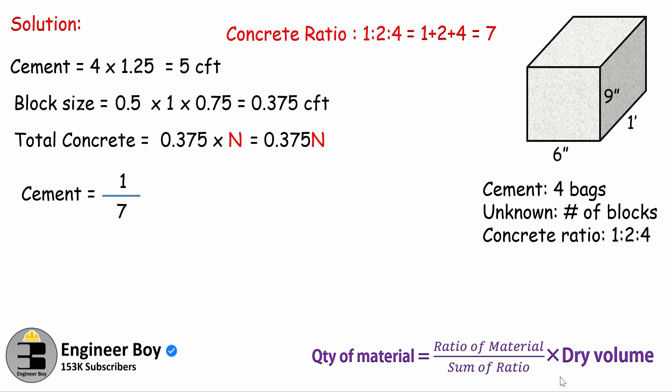Now we will multiply this with the dry volume. Remember, the dry volume can be the total concrete, which is that thing that's been determined a few seconds ago, times a factor which is 1.54.